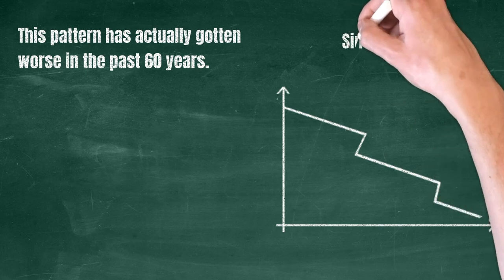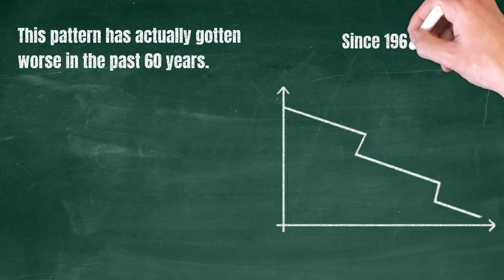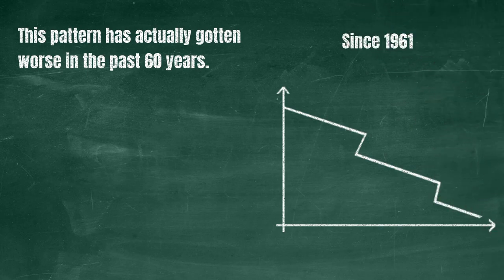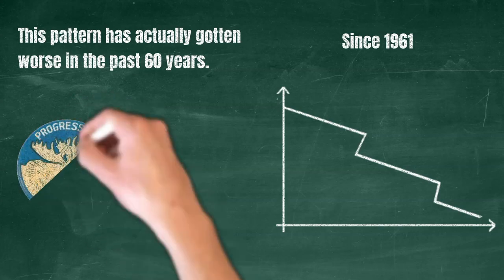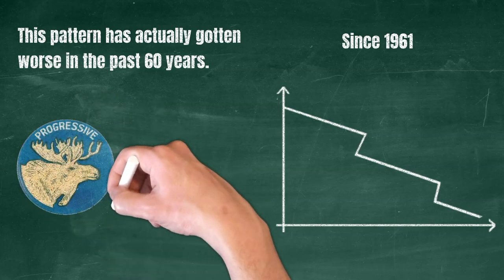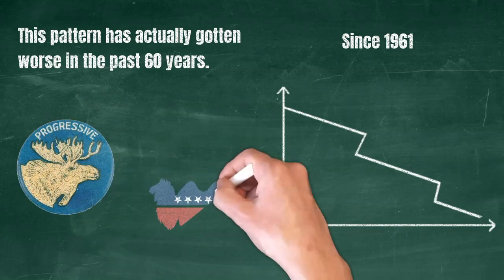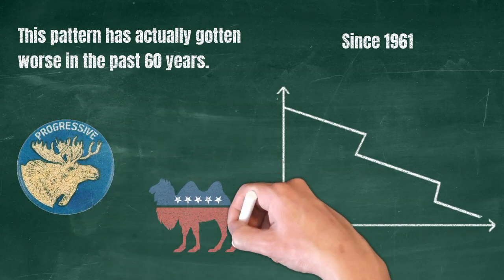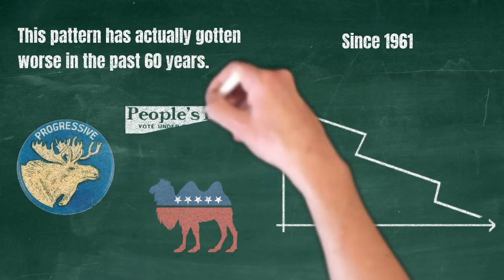This pattern has actually gotten worse in the past 60 years. Prior to 1961, there were numerous congressmen elected as members of the Labor Party, the Progressive Party, the Prohibitionist Party, the Populist Party, and so on.